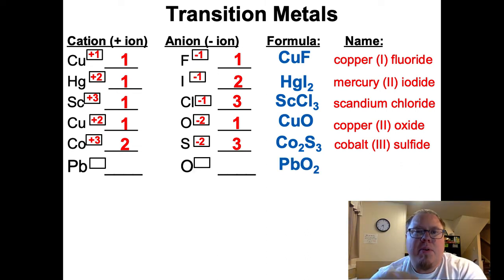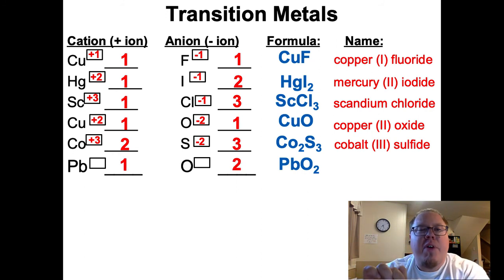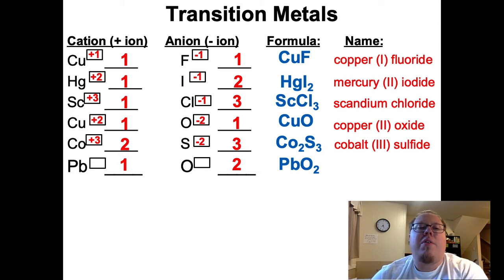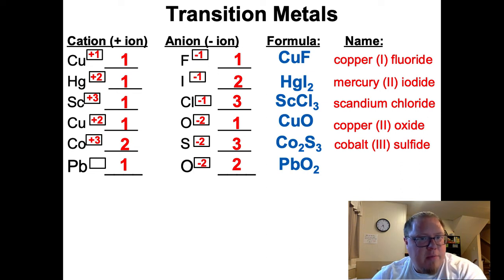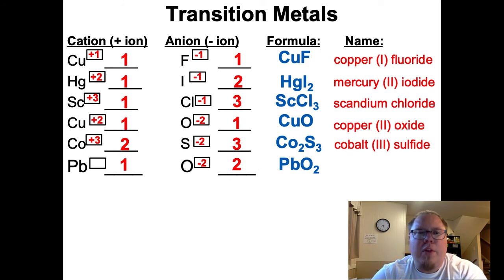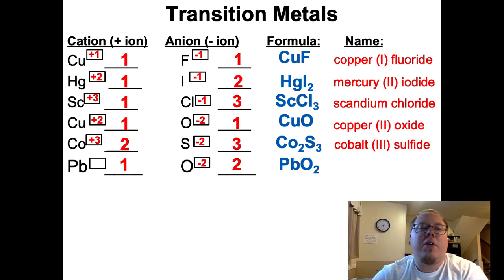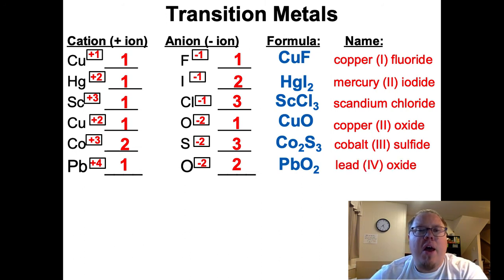Lead and oxygen - PbO2. The ratio here is 1 to 2, and lead is one of those carbon family elements where we do include a Roman numeral because it can be either 2 or 4. The ratio is 1 to 2 and oxygen is negative 2 - so negative 2 and negative 2 makes negative 4. There's only one lead, so it's got to be positive 4 to make that 1 to 2 ratio work. So this is lead 4 oxide, Roman numeral IV for four.